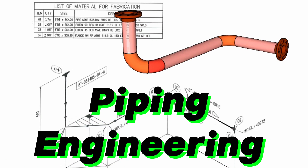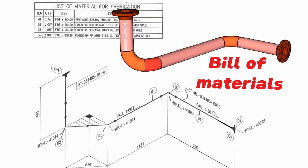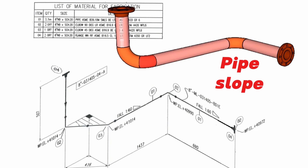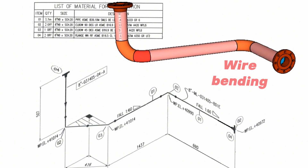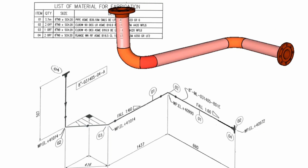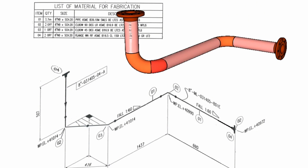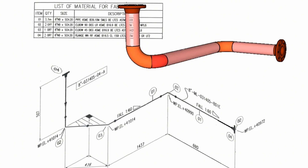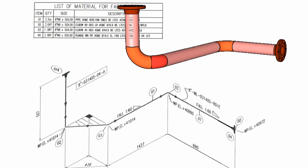Welcome to our Piping Engineering YouTube channel. We continue our videos about reading pipe isometric drawings. In this video, we'll be showing you how to read the bill of materials and how to calculate pipe slope in the piping isometric drawing with an easy method. At the end of the video, we will prepare a wire bending of this pipeline. Please subscribe to our channel to watch more piping videos. For easy understanding, we have shared a 3D model of this pipeline. Let's start the piping tutorial video.